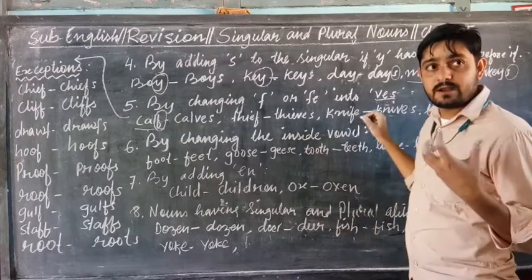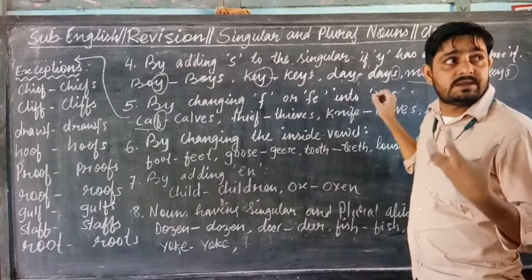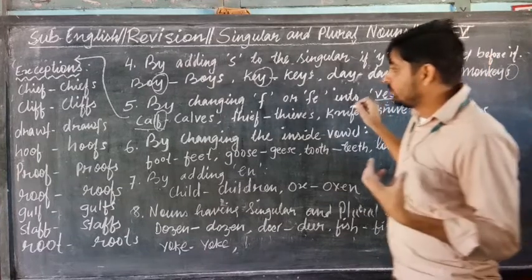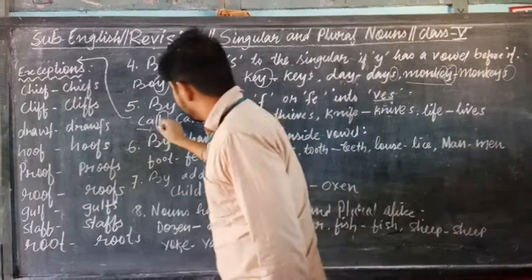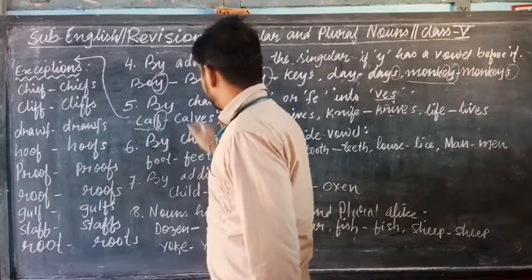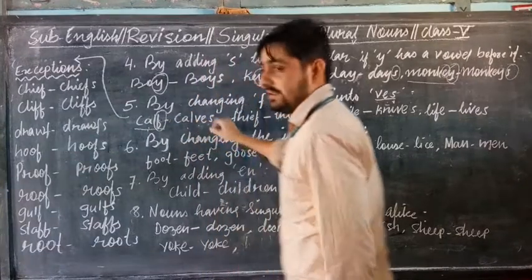So for example, 'calf' ends in F, so we change it to 'calves'. 'Thief' ends in F — so we write 'thieves'. 'Knife' ends in FE — so we write 'knives'. 'Life' ends in FE — so we write 'lives'. We remove the F or FE and write VES.